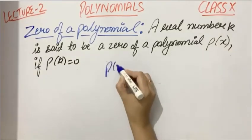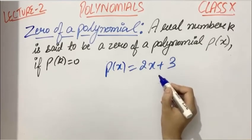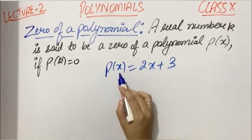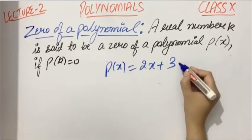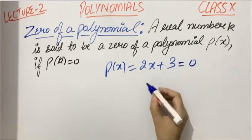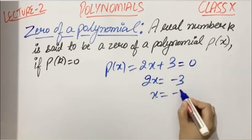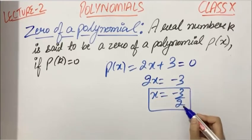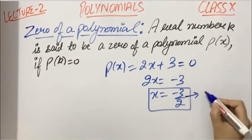Here I am taking P(x) = 2x + 3. Now I need to find the zeros of this polynomial. For that, I need to tell you those x values where the polynomial attains the value 0. So I'll set this equal to 0 and find the value of x. x = -3/2.